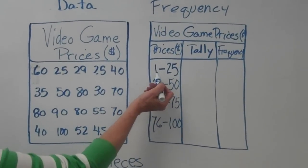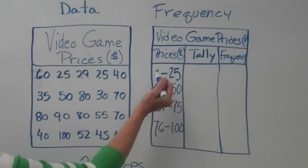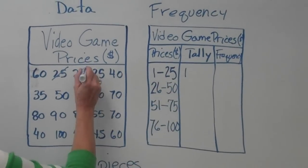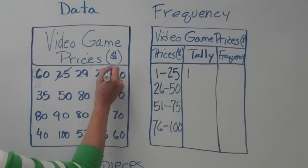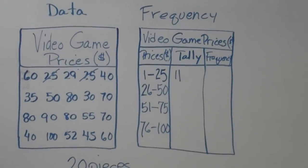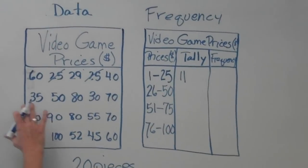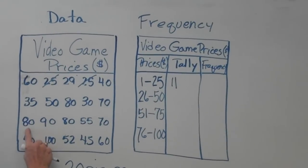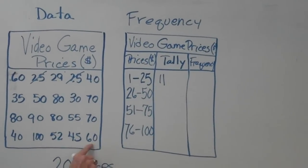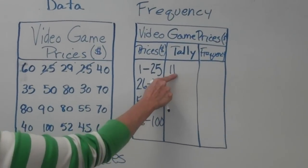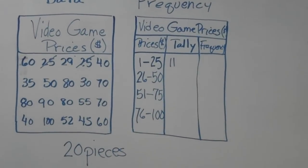In our interval from 1 to 25 dollars, 25 fits in there. Tally mark. 29 does not, 25 here fits in, so cross it off so you don't count it by accident again. Next row, there's nothing that fits in 1 to 25. Next row, nothing. Nothing. And the last row, nothing. So we have two pieces of data tallied in the 1 to 25 interval.